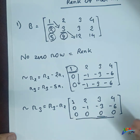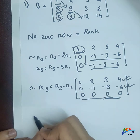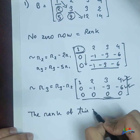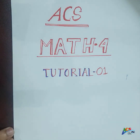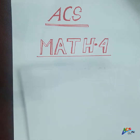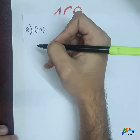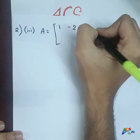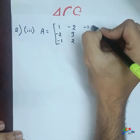After diagonal-wise checking — zero particles and non-zero particles — I can determine the rank. The total zero rows at the bottom don't count; only non-zero rows matter. Now let me introduce another example where matrix A is equal to: 1, minus 2, minus 1 / minus 2, 3, 4 / minus 1, 2, 6.